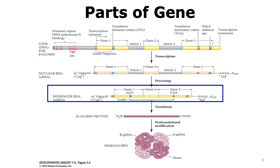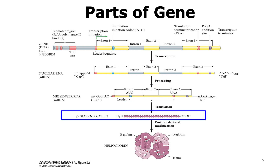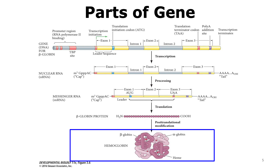After the nuclear RNA is processed, we end up with the messenger RNA, which has the 5' cap, the 3' poly-A tail, and the introns have been removed. Once this messenger RNA is formed, it is transported outside the nucleus into the cytoplasm, where translation can occur in order to form a polypeptide chain. This polypeptide chain will then undergo post-translational modifications and folding mechanisms to end up with a three-dimensional protein.